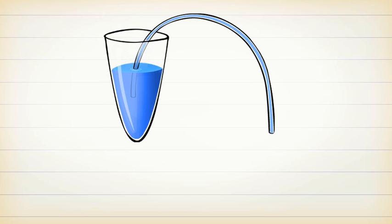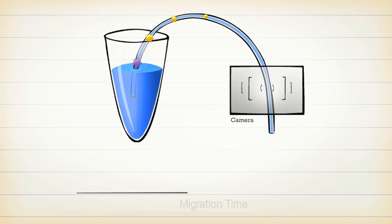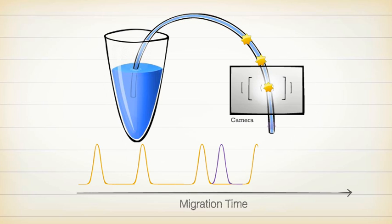Smaller fragments move faster. Larger fragments take a little longer. Each labeled fragment is detected by the system camera, based on the dye used, and the fluorescent signal produced generates a peak.